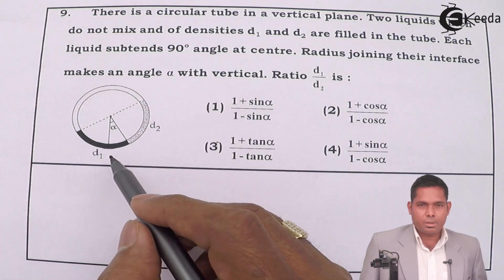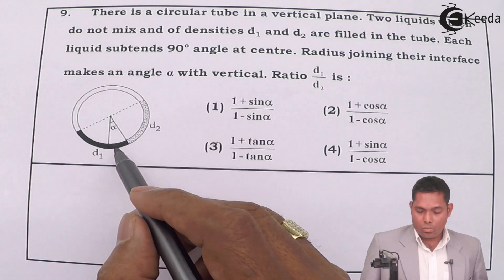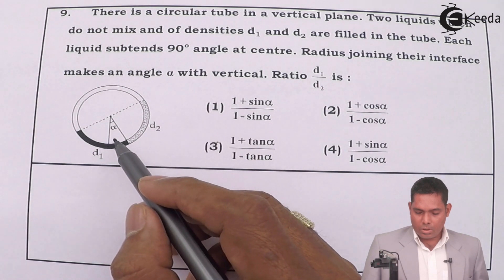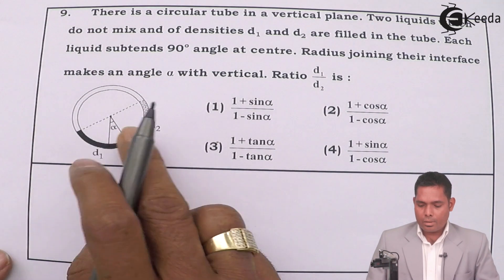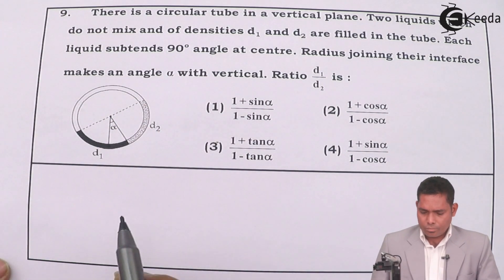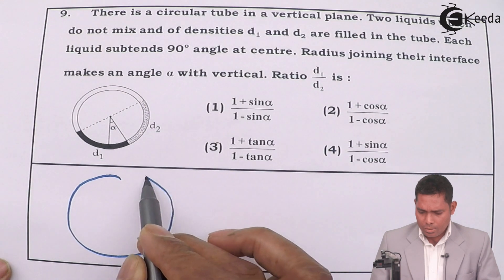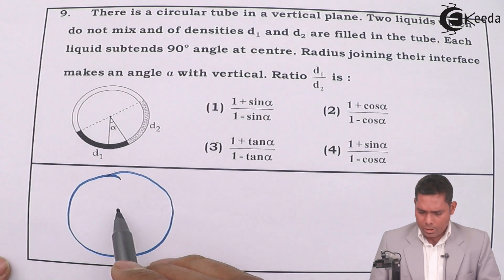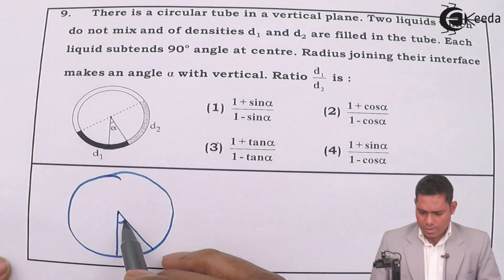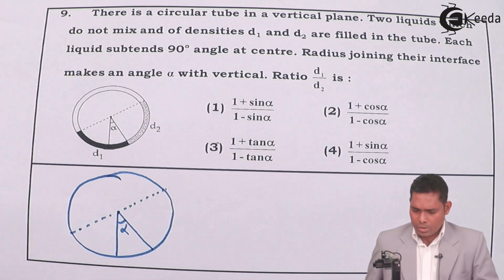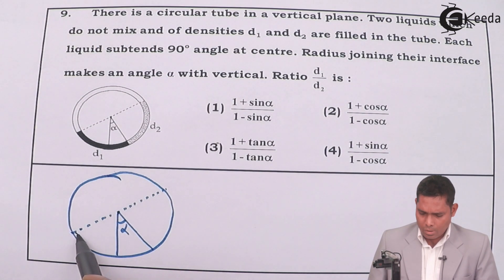The pressure from this side and that side must be the same and it is balanced here. Our aim is to find the pressure at this level and that should be equal on both sides. In the diagram, this is the tube, this is the center, this is the interface, the angle is alpha, and I have a diameter like this. One liquid goes from here up to here.